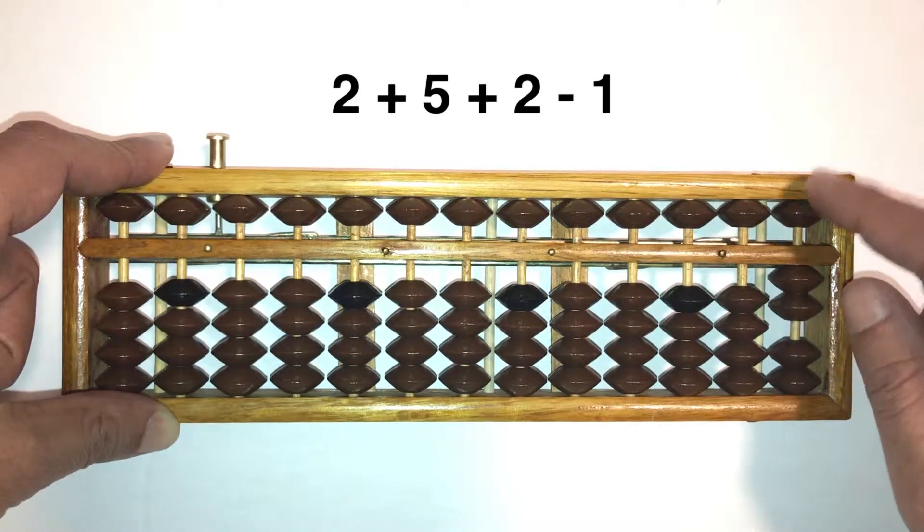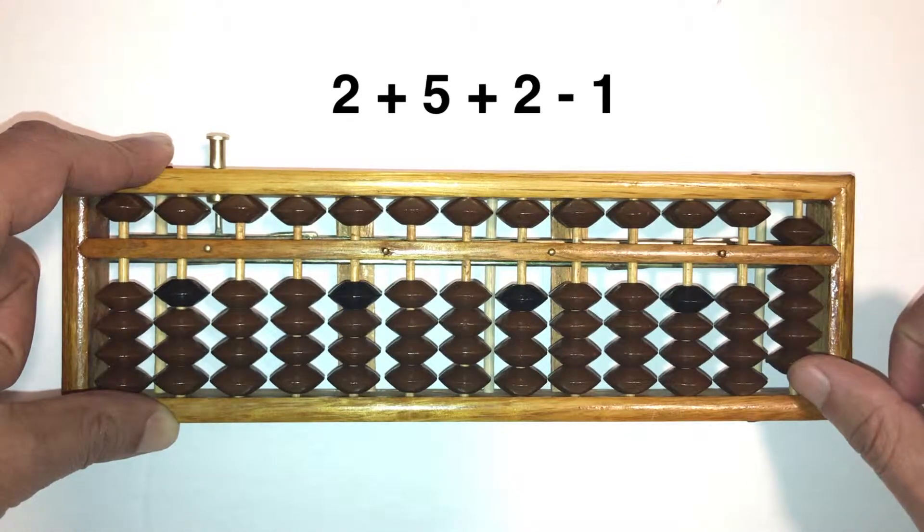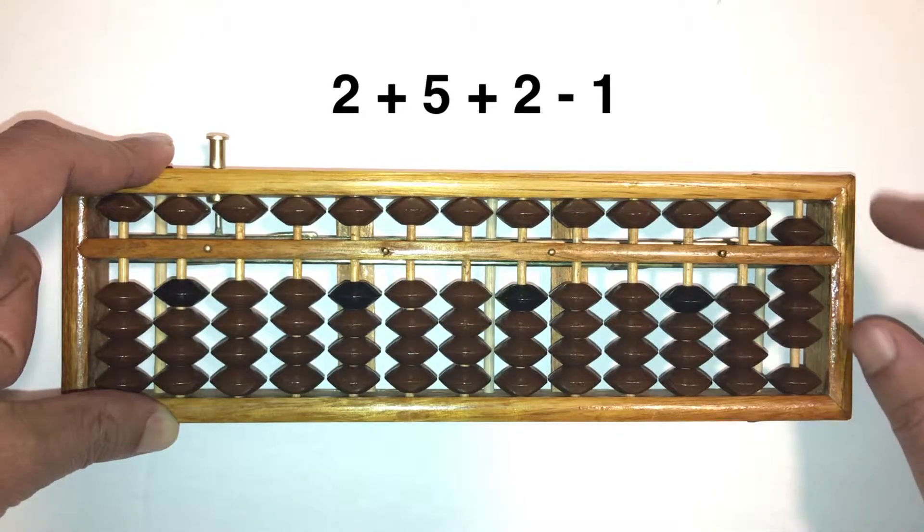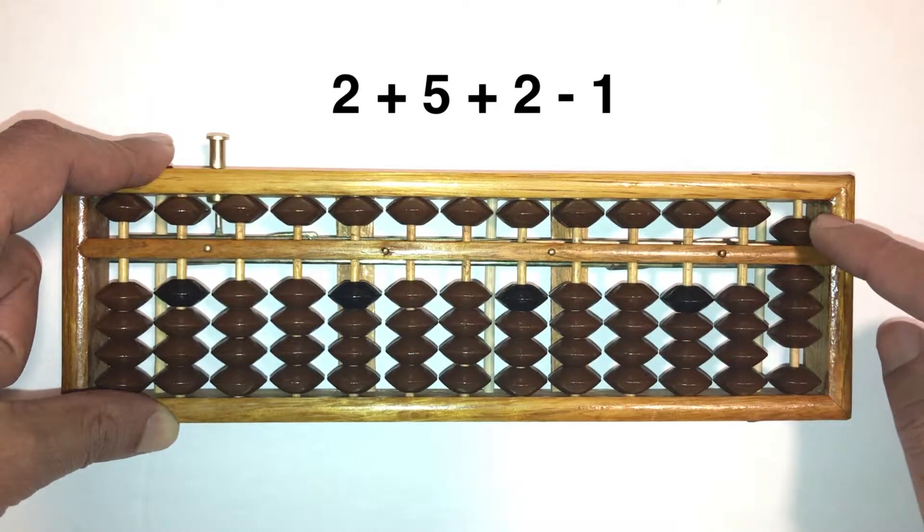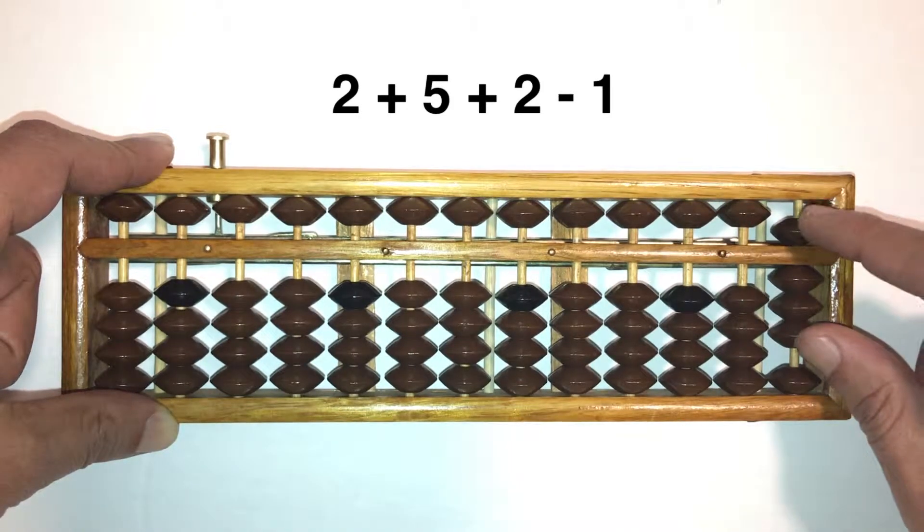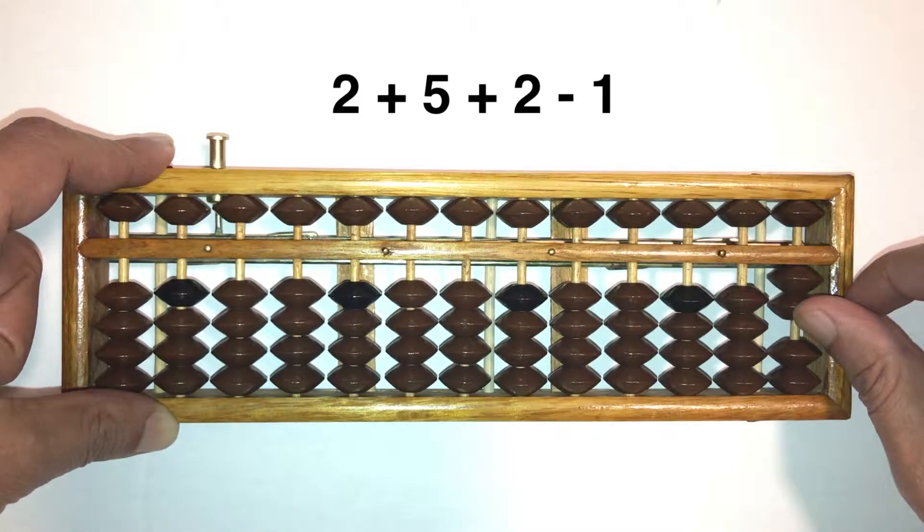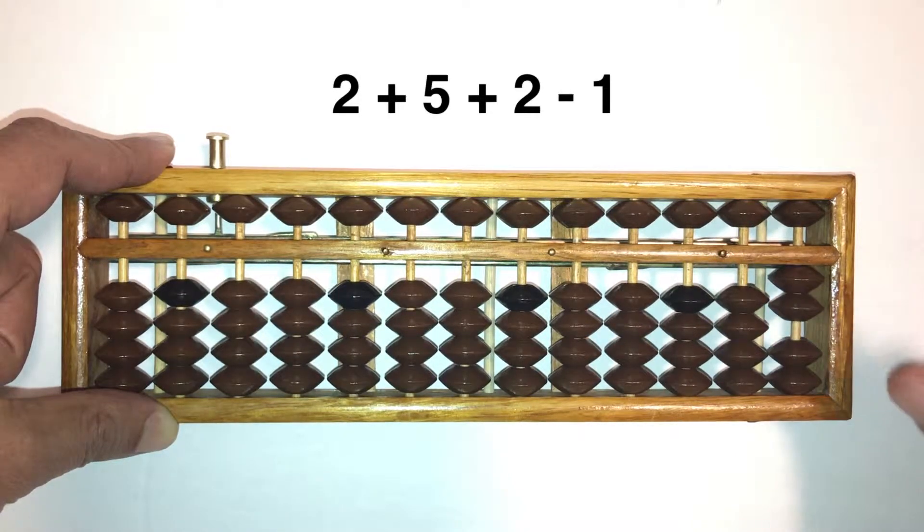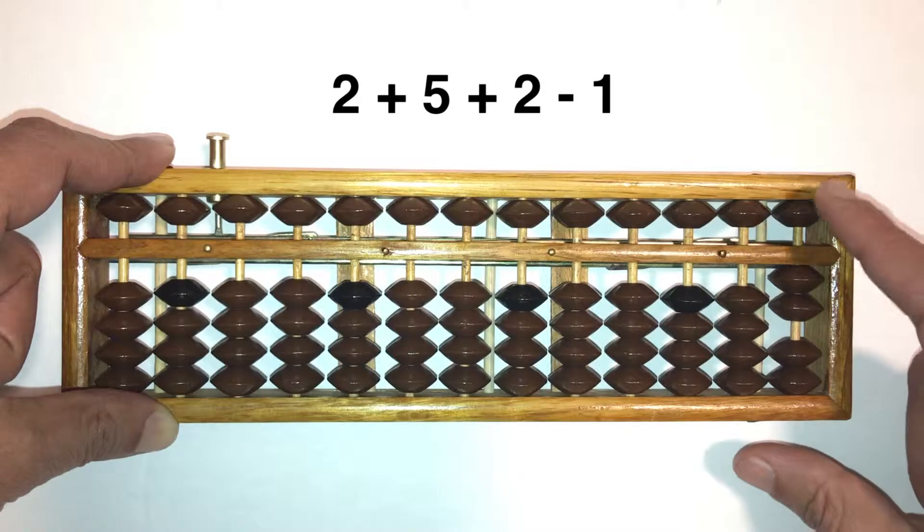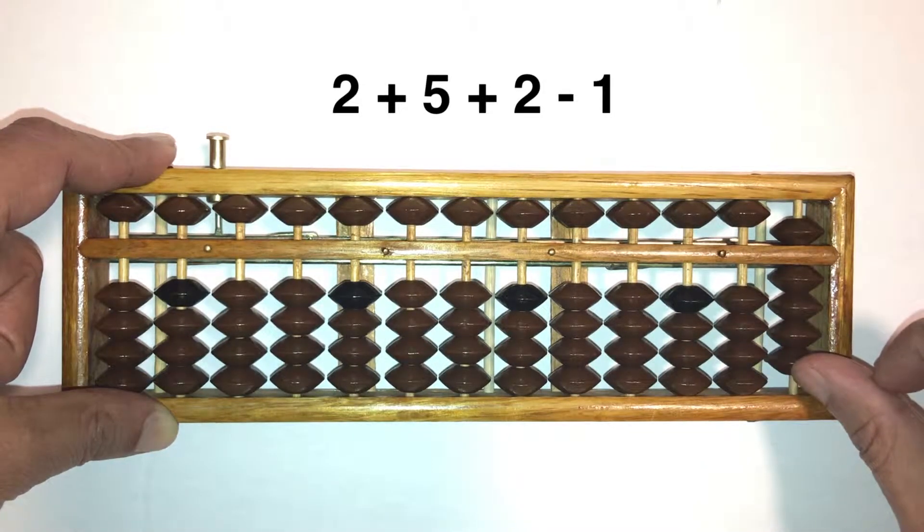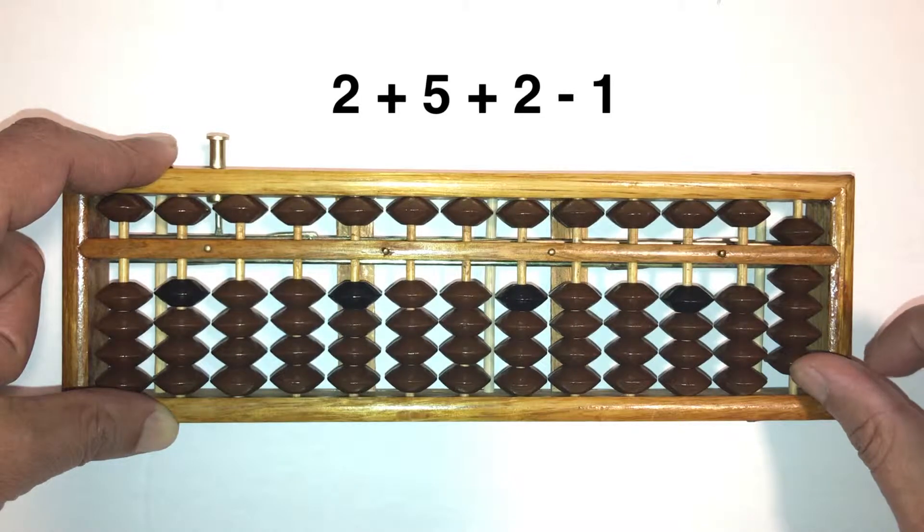Here we go: 2 plus 5 plus 2, take away 1. The answer is 8. Okay let's do that again. Move the 2 beads together towards the answer bar with your thumb, add 5 with your pointer, add 2 more with your thumb by moving them together towards the answer bar.